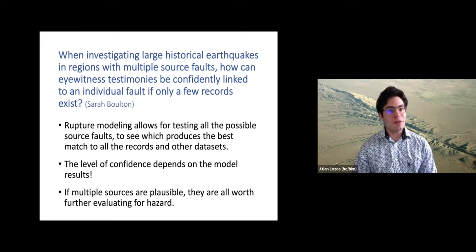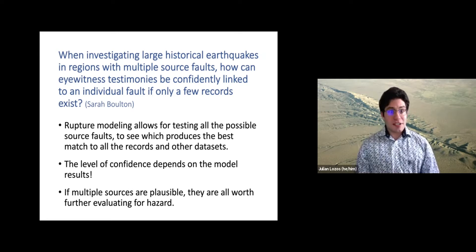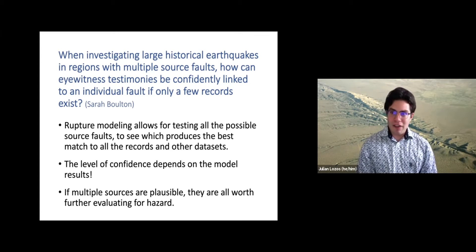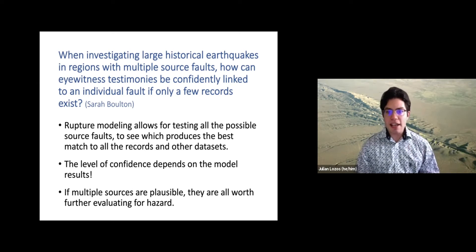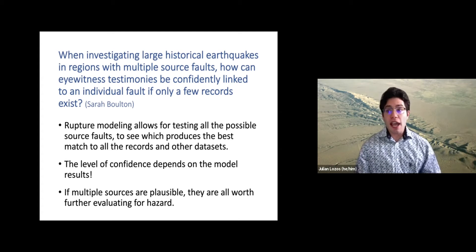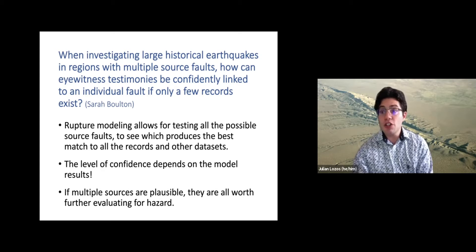Sarah Bolton asked: when investigating large historic earthquakes in regions with multiple source faults, how can eyewitness testimonies be confidently linked to an individual fault if only a few records exist? I think this is an awesome question because this is one of the big things I want to try to do with this method. In this kind of condition, I can test all of the possible faults — set up a model with a ton of different faults and start the earthquake on any one of those faults and see which other faults are involved, and see which scenario matches the observations that do exist best.